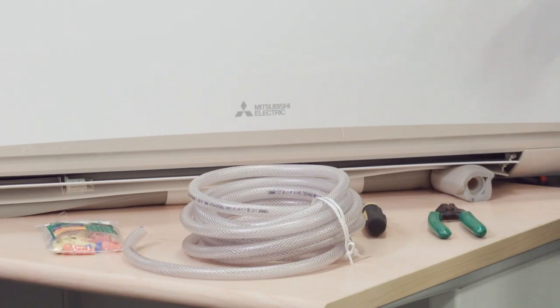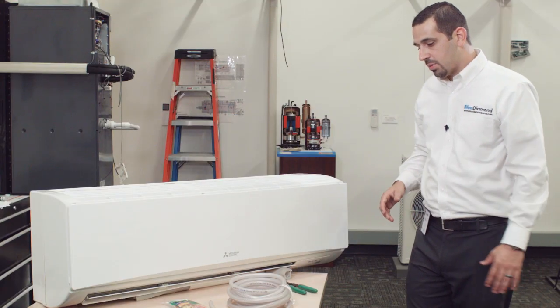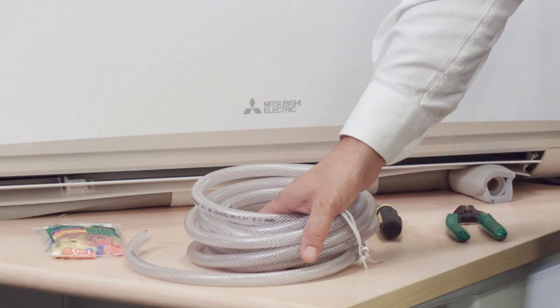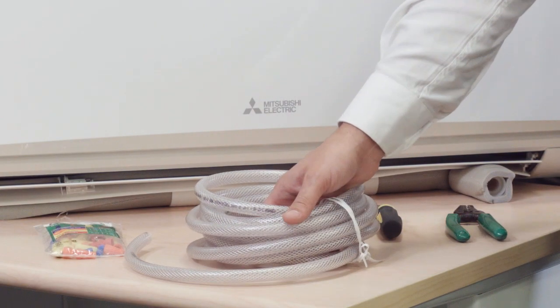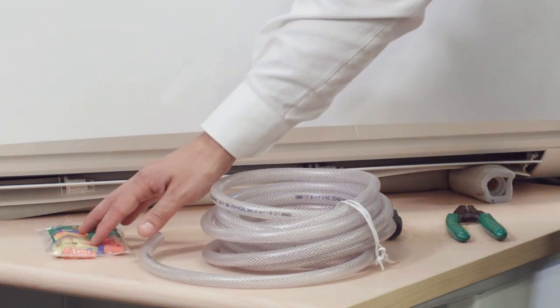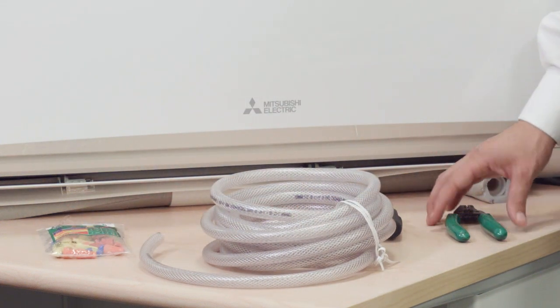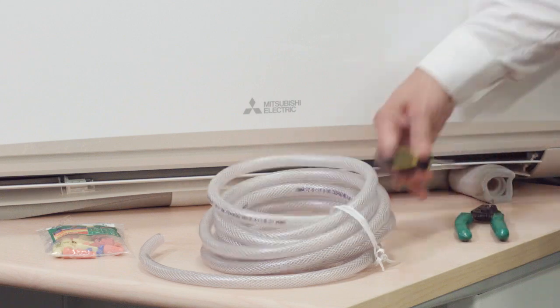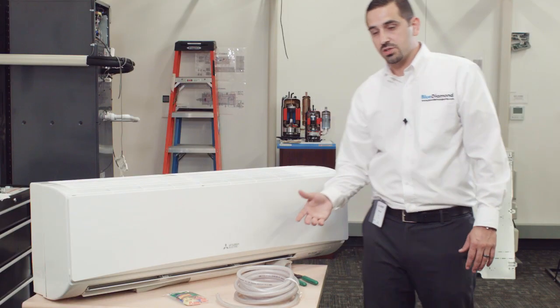What we'll need to complete the installation other than what's in the pump box is quarter inch ID tubing, we recommend reinforced, wire nuts, basic install tools, wire cutters, and a Phillips head screwdriver. We can get started on the installation.